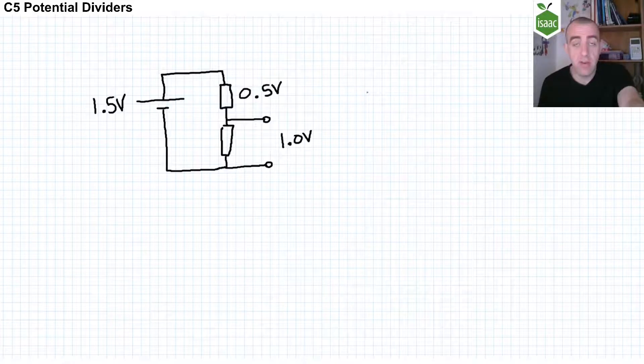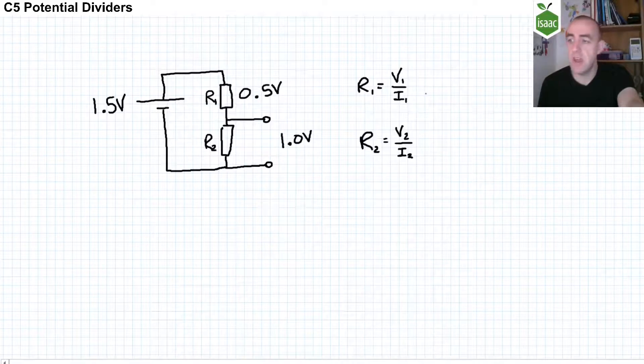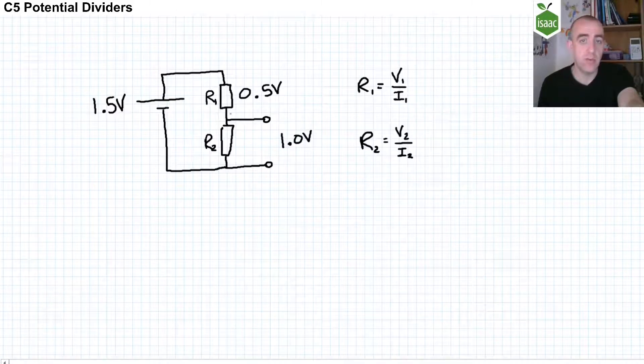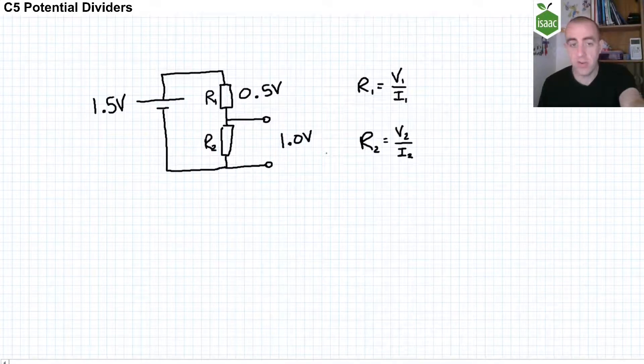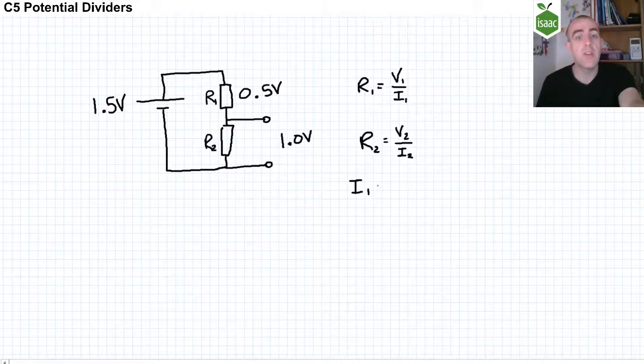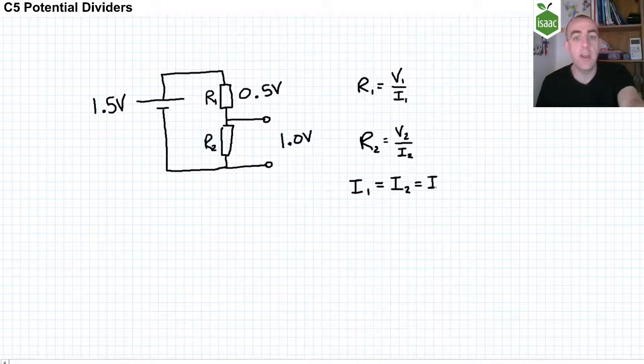We use the definition of resistance, voltage divided by current. For each of these components the resistance is as I've written here. So the resistance of the top resistor would be the potential difference across the top resistor divided by the current through the top resistor. And the resistance of the second resistor would be the potential difference across the second resistor divided by the current through the second resistor. But because these two components are in series, Kirchhoff's first law tells us that the current through them both must be the same.